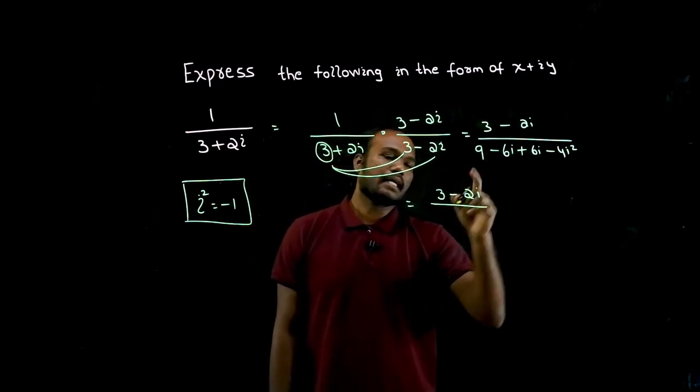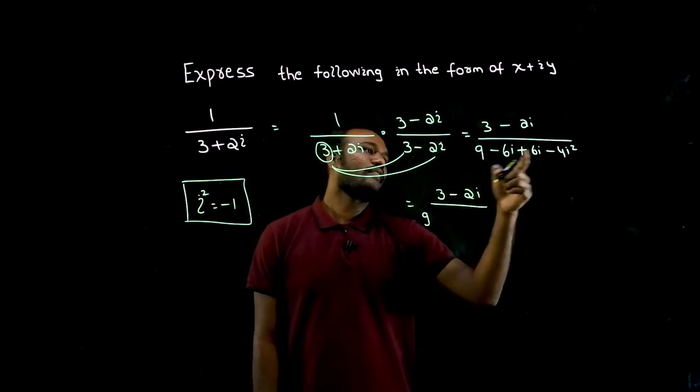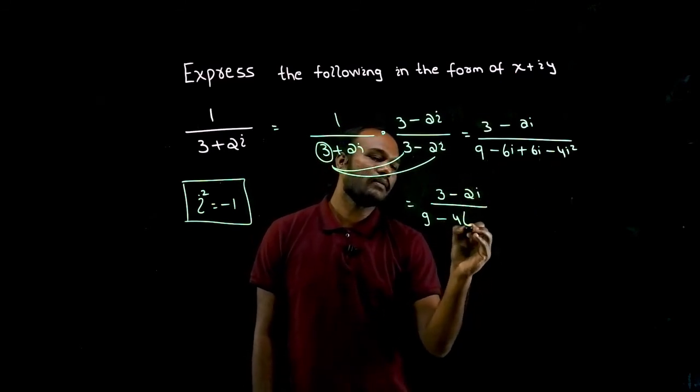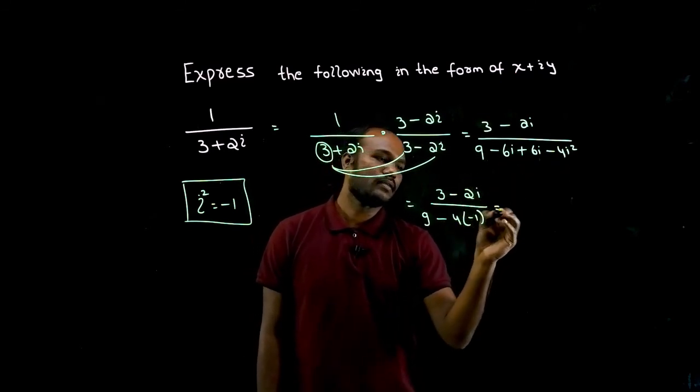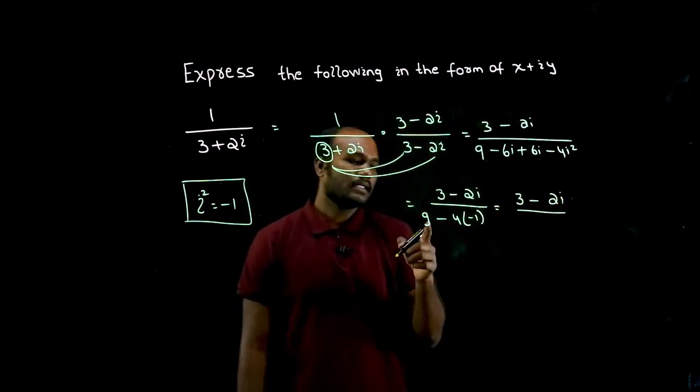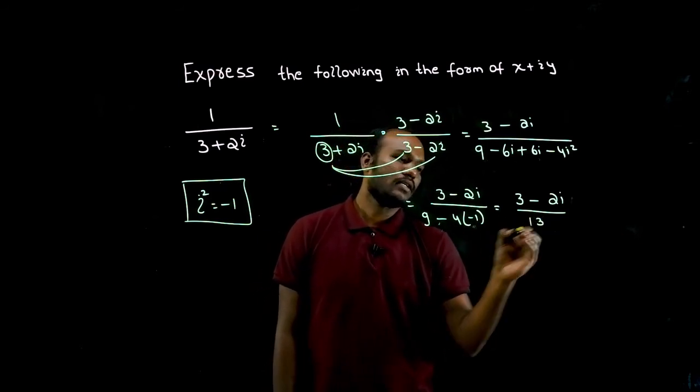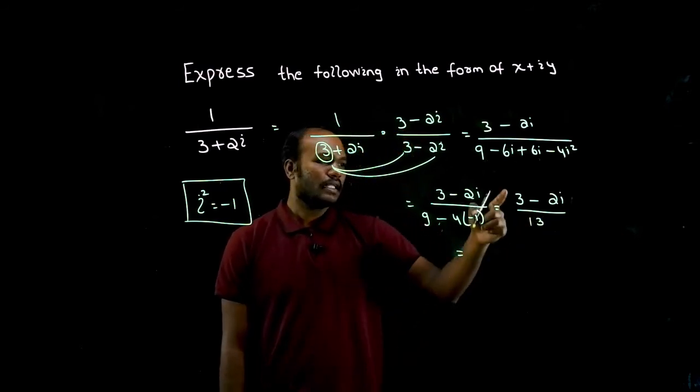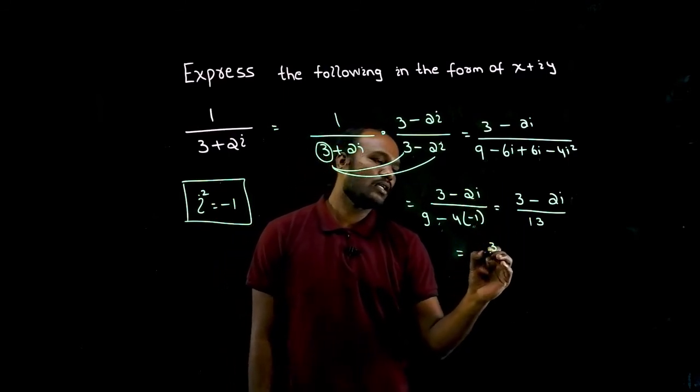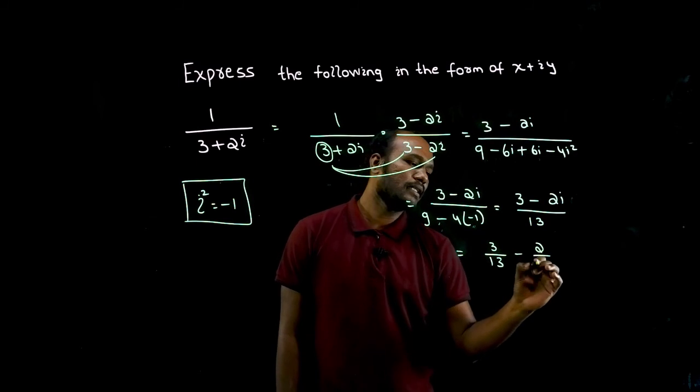9 minus 6 plus 6 get cancelled so I have 0, so minus 4 times i square is minus 1, right? So 3 minus 2i divided by see 9, minus into minus is plus, so 9 plus 4 is 13. So what do I get solution, this number by this number that is 3 by 13 minus this number by this number that is 2 by 13.